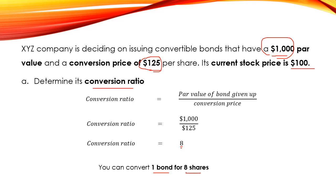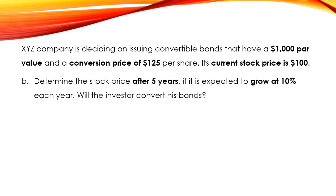Let's move to Question B: determine the stock price after five years if it's expected to grow at 10% each year, and will the investor convert his bonds? To determine the stock price after five years, we will use this formula: the market price at period n equals the market price at period zero times (1 + g) to the power n, where the market price at period zero is the current stock price of $100, g is the growth rate of 10%, and n is the number of years — five years.